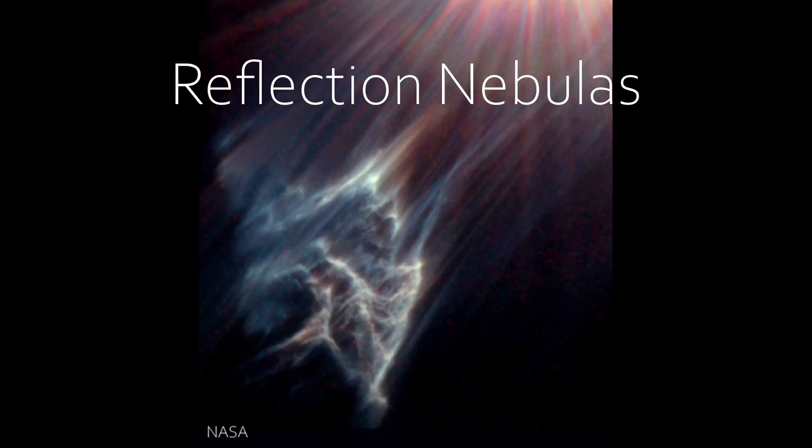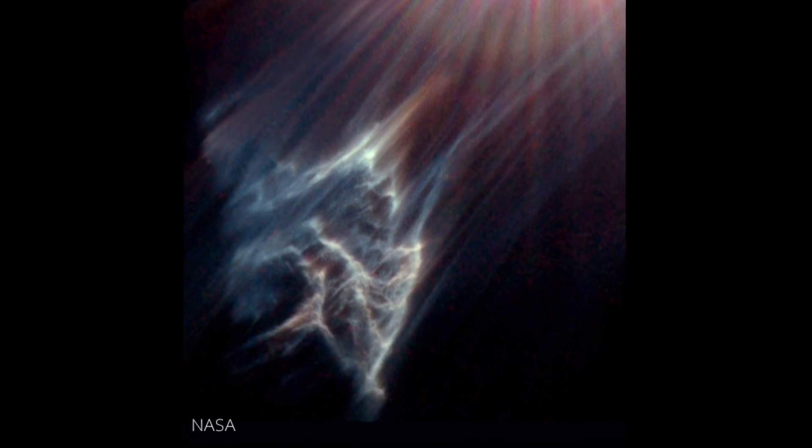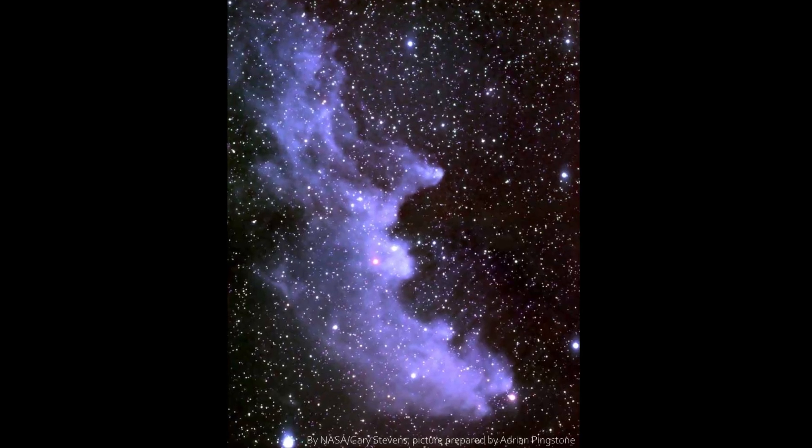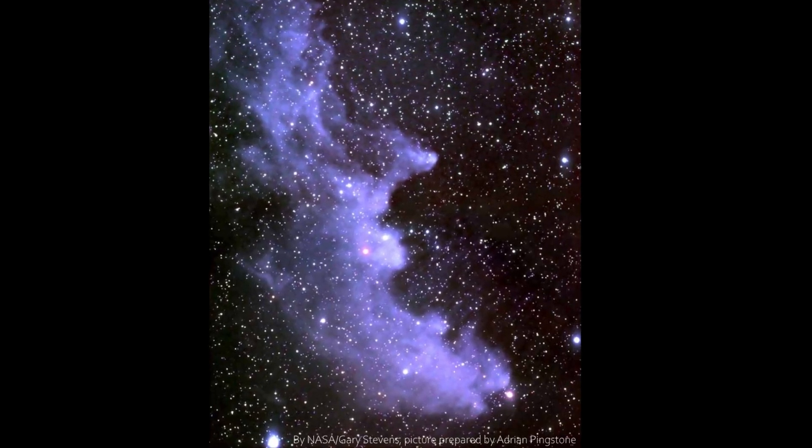The second type of nebulas are reflection nebulas. They too are made out of interstellar dust and gas and they are simply illuminated by nearby stars, reflecting their light, same as the moon reflects the sun's light.